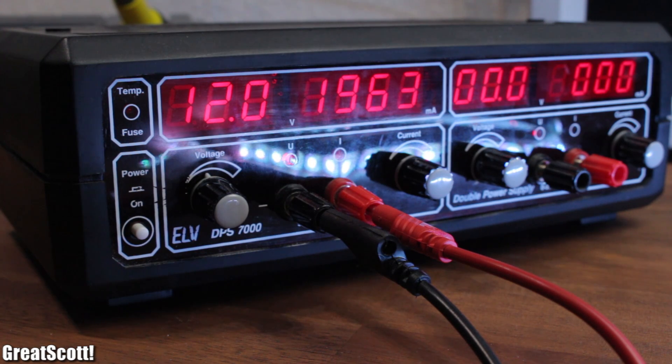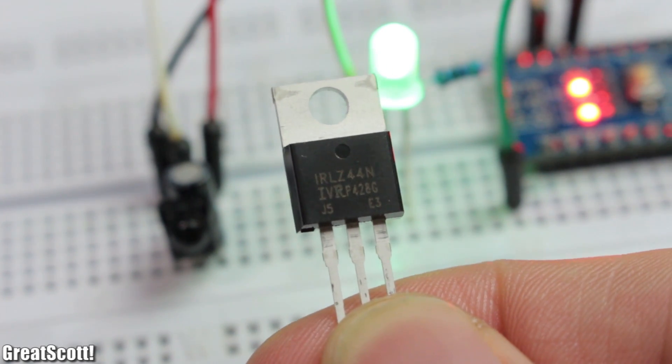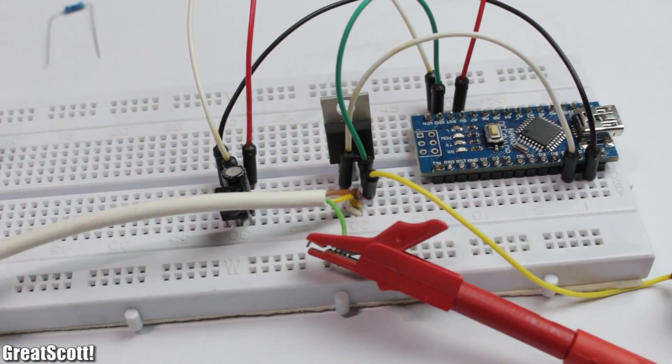I also need an N-channel MOSFET which can handle the 2A current draw. I chose this IRL C44N, which works without any problems during the first test.